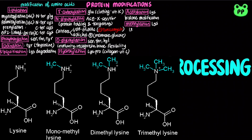Methylation also occurs at the lysine residue. Monomethyllysine and dimethyllysine are found in muscle proteins as well as cytochrome C, whereas trimethyllysine is a component of calmodulin, a calcium-binding protein abbreviated as CAM, as well as a precursor to carnitine biosynthesis.